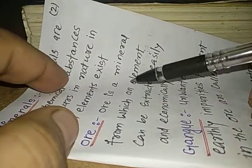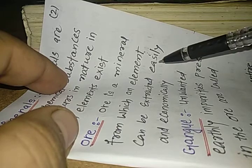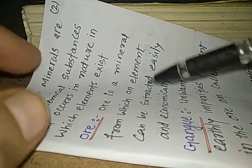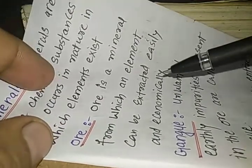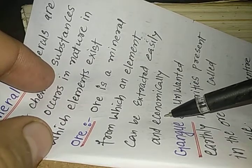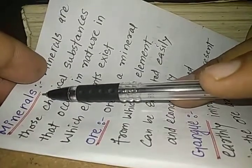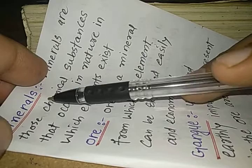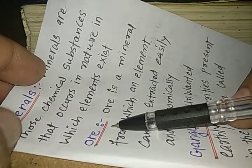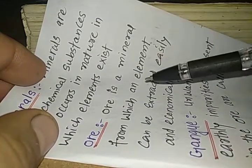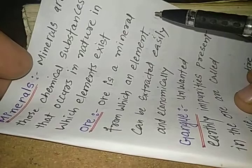Ore. Ore is a mineral from which an element can be extracted easily and economically. Easily means here with a very simple process and economically it means here that with low costing. That means in the cheaper manner. So, you know there are many minerals but all the minerals which are available they cannot be utilized to extract the element. So, from those compounds from which an element can be extracted can be obtained in the pure form easily and economically such mineral is known as ore.